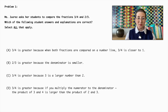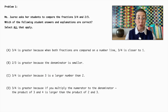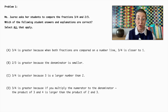Problem number one. Ms. Juarez asks her students to compare the fractions three-quarters and two-thirds. Which of the following student answers and explanations are correct? Select all that apply. Option A: Three-quarters is greater because when both fractions are compared on a number line, three-quarters is closer to one.